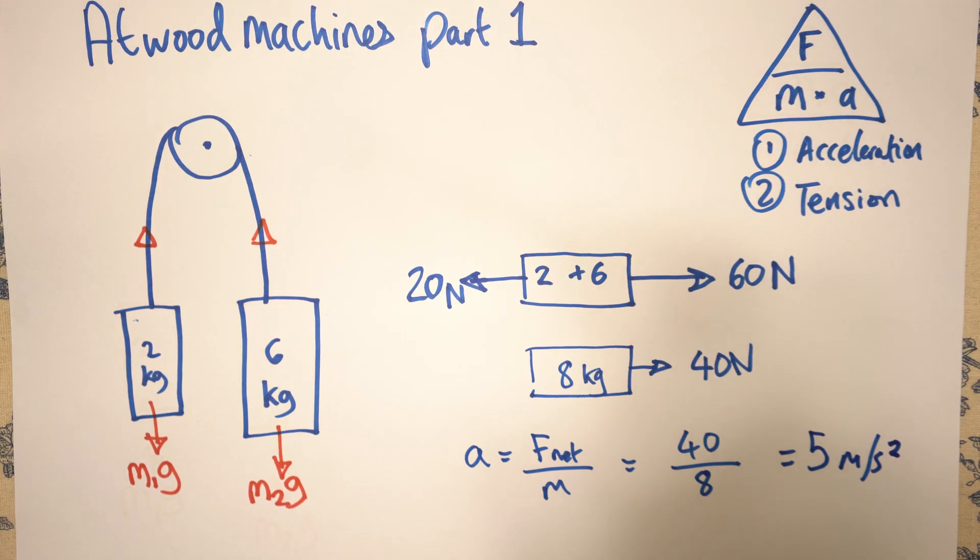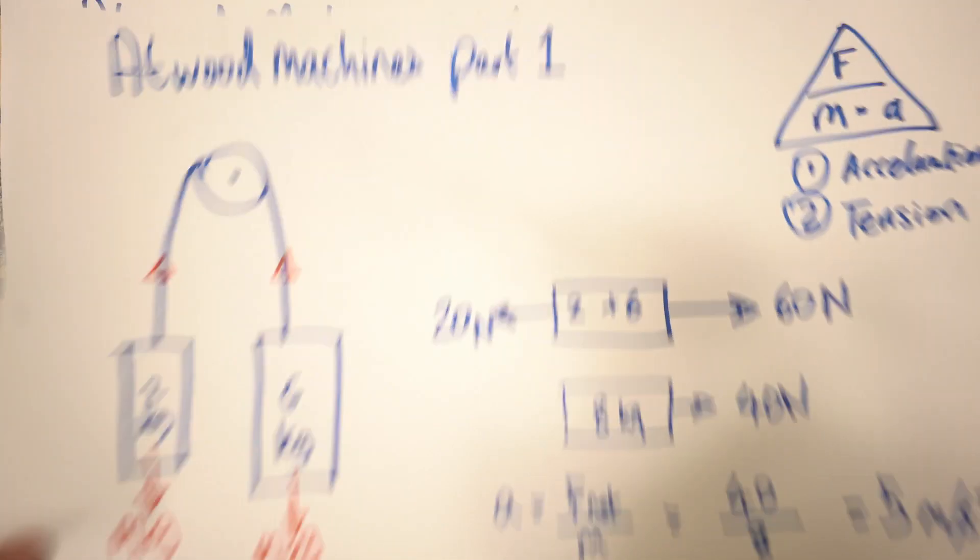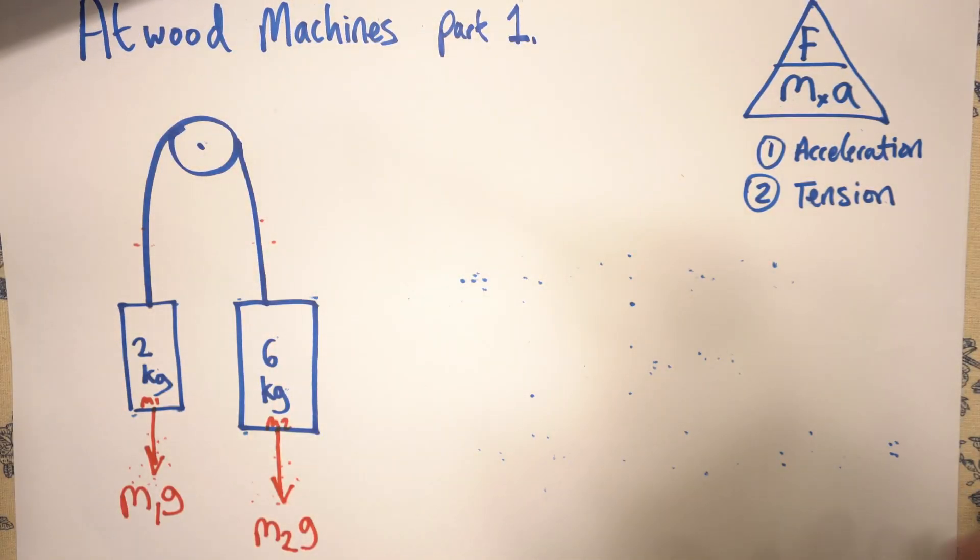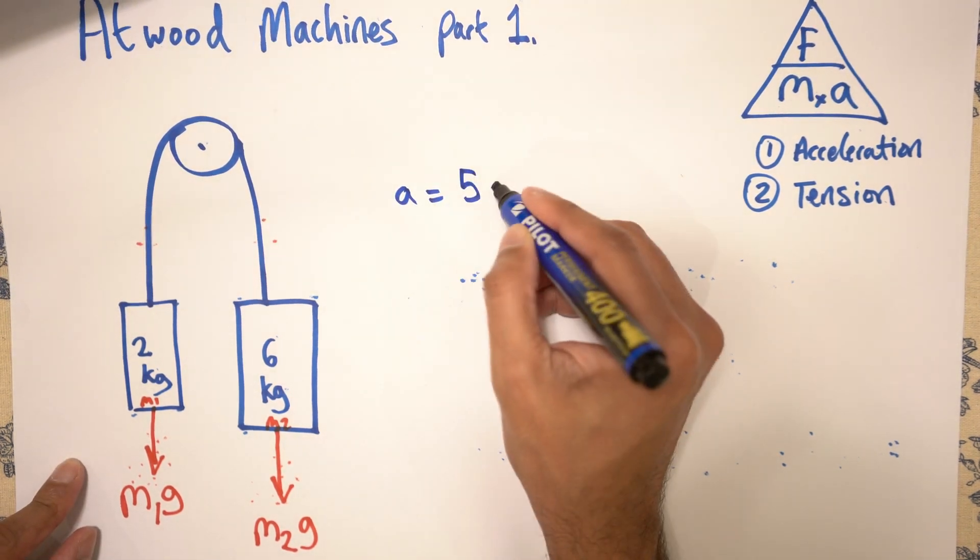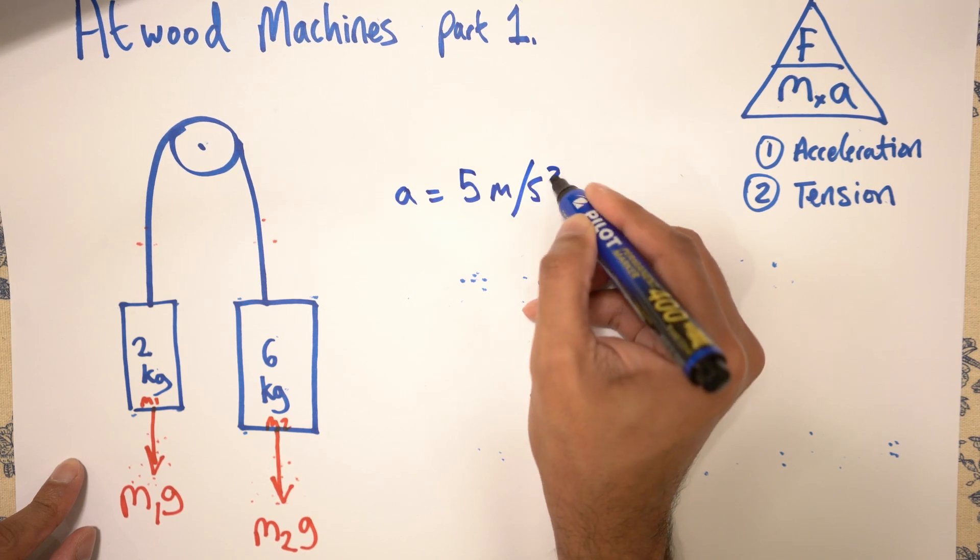The second bit is about the tension. Now we can use another bit of paper. And we can write on here that A is 5 meters per second squared.